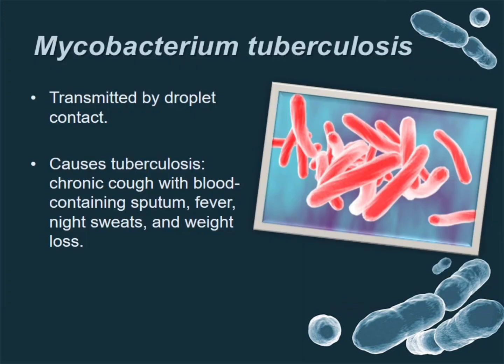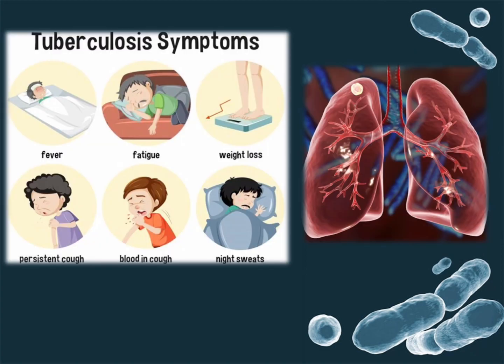Mycobacterium tuberculosis — this species is transmitted through droplet infection. This bacteria is famous due to a pandemic situation in rural areas of almost the whole world. Mycobacterium tuberculosis is the causative agent of tuberculosis, which causes blood-containing sputum along with chronic cough, fever, night sweats, and weight loss.